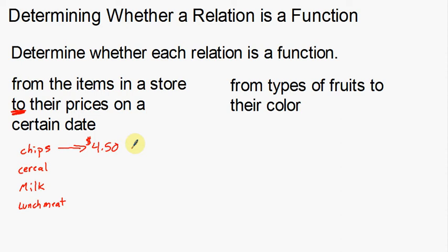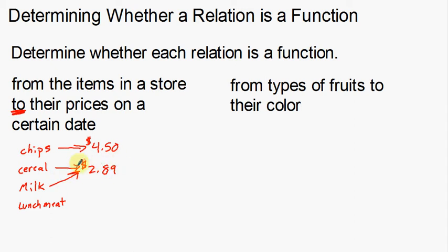Cereal, on the other hand, is going to be a little bit cheaper — maybe I'm buying an off-brand — we'll go with $2.89 for a box. Now for milk on this certain day, maybe milk is on sale, so milk is also going to be $2.89. Notice here that I've got two arrows going to the same price — we'll talk about this in a minute. Lunch meat is going to be about $5 for a pound of sliced lunch meat.